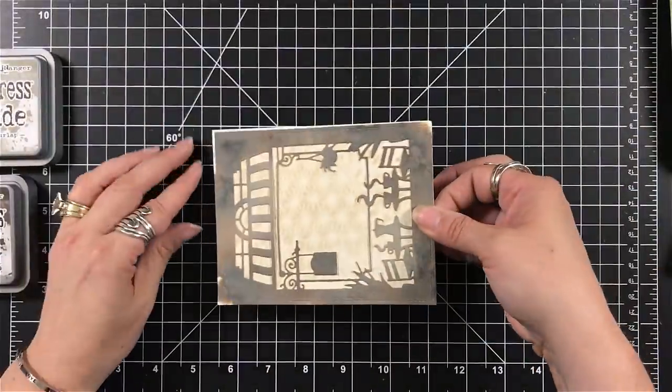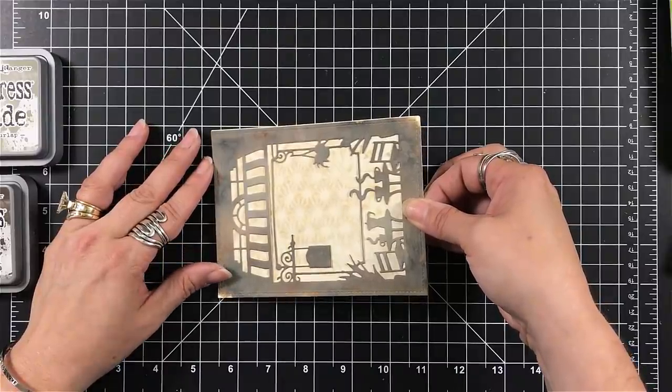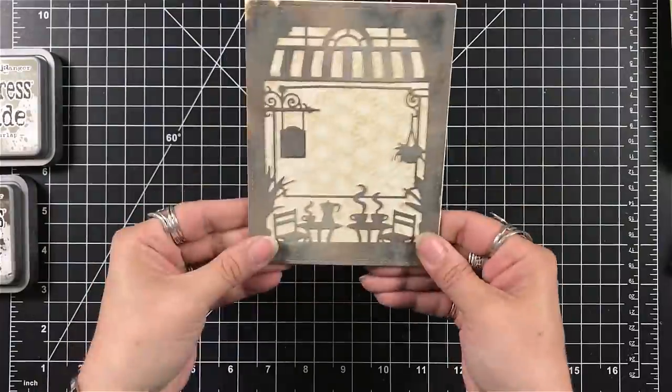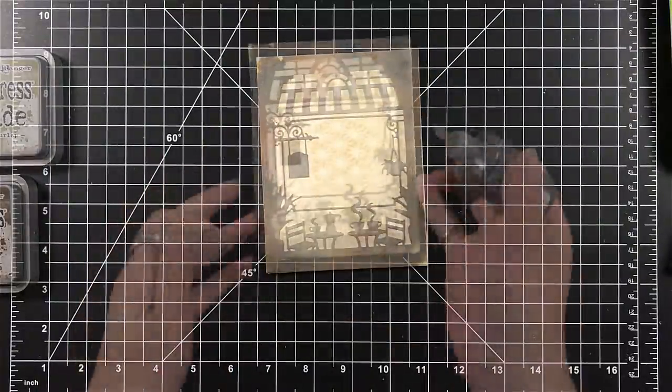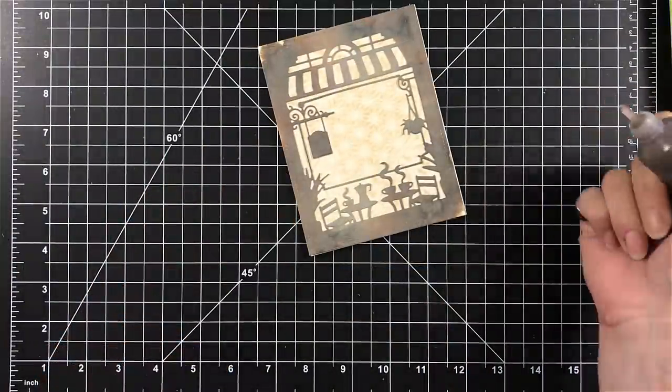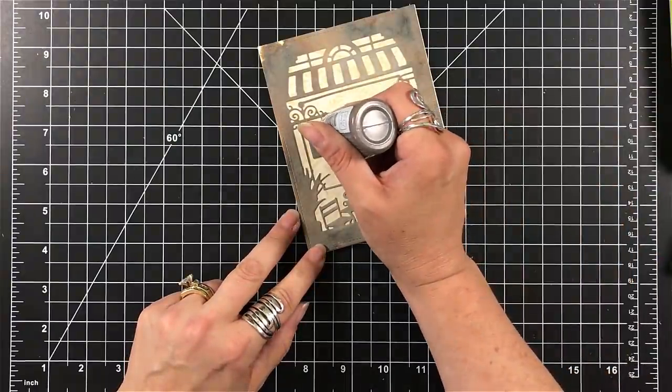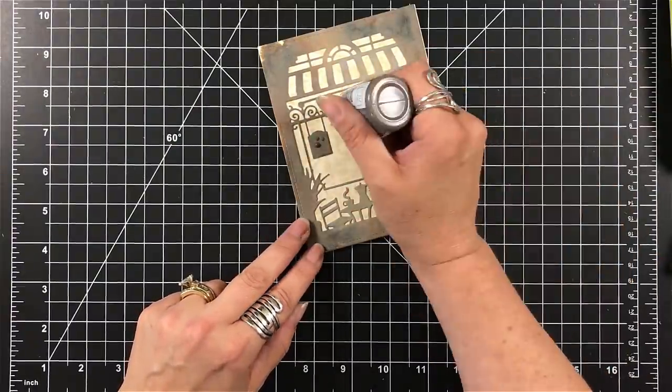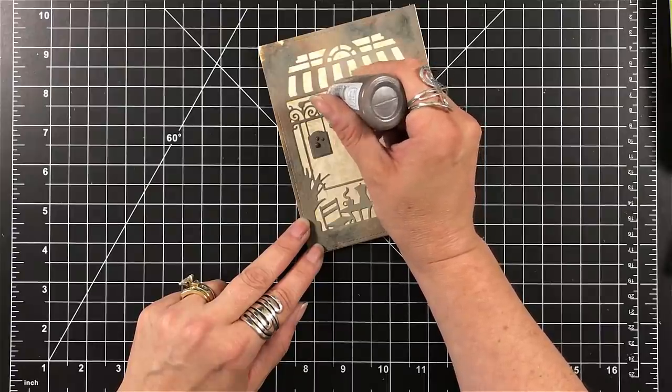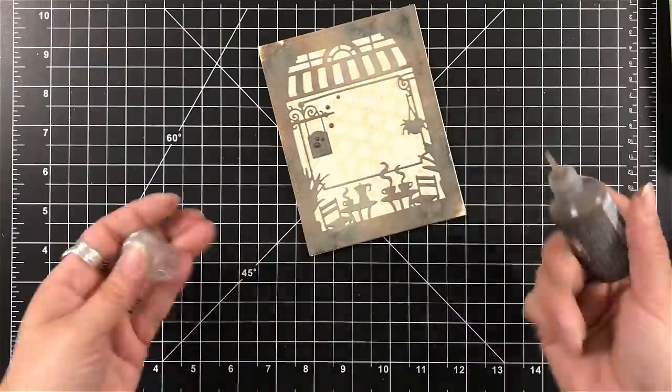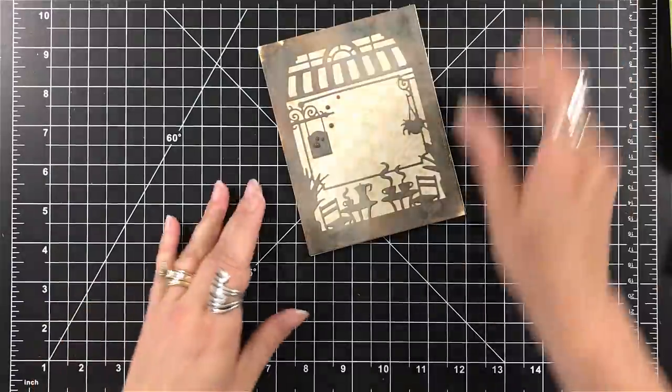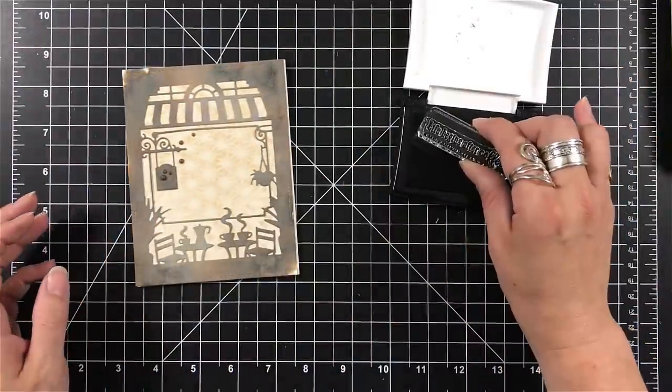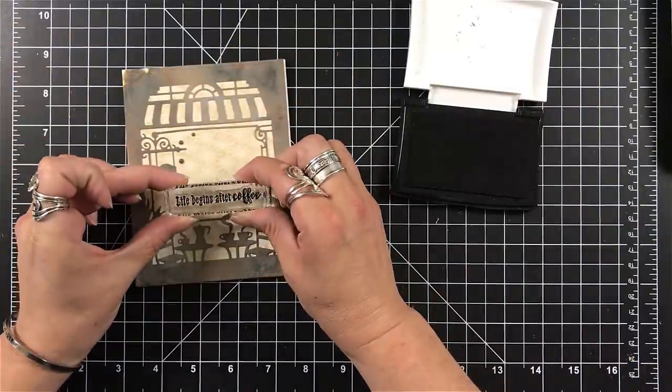I'm going to use some fun foam to prop this up onto my four and a quarter by five and a half top folding card base. And this will cover the whole front of the card panel. I grabbed my dark walnut Nuvo drops and I'm just going to add some accents coming off of the sign so they're going to trail up into the canopy of that card.